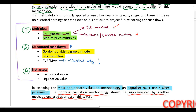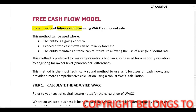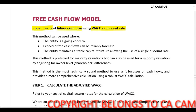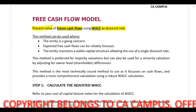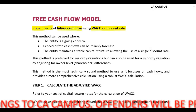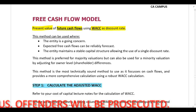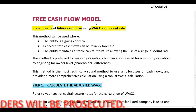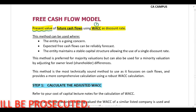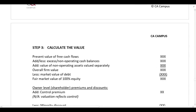We are now going to look at the free cash flow method. Using this model we are going to calculate the present value of our future cash flows, and we use our weighted average cost of capital as the discount rate. I have included steps, so study them carefully. Step one is to calculate the adjusted weighted average cost of capital. Step two is to calculate your future cash flows and a continuing value. Step three is to wrap everything up and calculate our value.